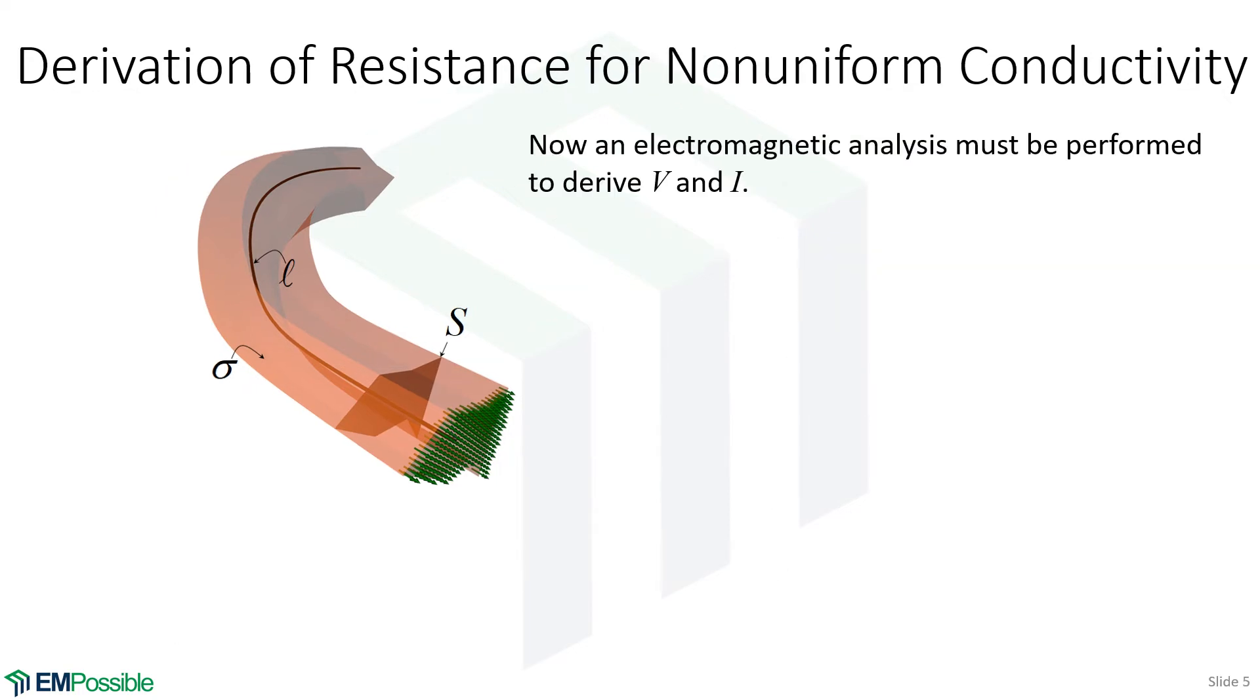Well, what if that conductivity is not uniform? Now we have to use electromagnetic analysis to derive the voltage and the current and relate them to get the resistance.